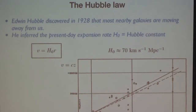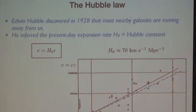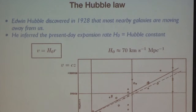For all the nearby galaxies, he plotted the correlation between the distance from us to the galaxy and the Doppler shift — which is really the expansion redshift. He found a tight correlation: the observed Doppler shift increases with distance. If there were no expansion, all points would lie on a horizontal line. Of course there is scatter because on top of the cosmological redshift there is also the redshift from peculiar velocity, but he got the trend.